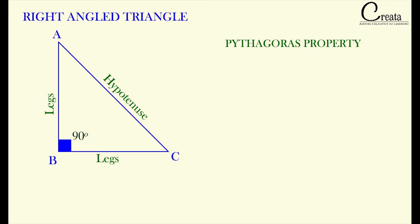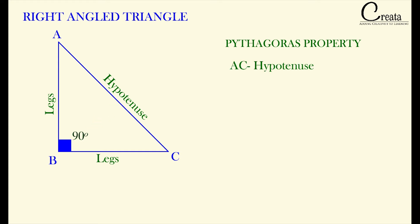For triangle ABC, angle B is 90 degrees, so the side opposite to angle B is AC. Therefore AC is the hypotenuse for triangle ABC, and AB and BC are the legs of the triangle.